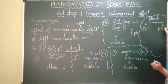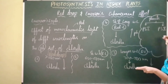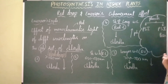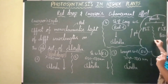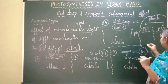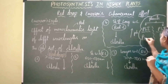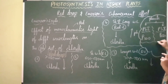One photosystem is getting activated at shorter wavelength of red light, that is 680 nanometers, hence it is also called P680. The other photosystem, that is PS1, is getting activated at longer wavelength of red light, that is 700 nanometers, hence it is also called P700. In case of bacteria, there is only one type of photosystem.